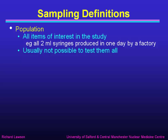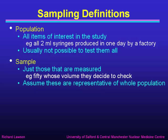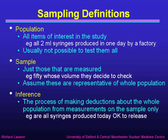Starting with some definitions. The population means all items of interest in the study. For example, if we're interested in a factory that makes 2ml syringes, then all the syringes produced in one day in that factory might be the population. But it's not possible to test all of them, so we usually talk about a sample — just those that are going to be measured. We might take 50 syringes to check the volume. We have to assume those are representative of the whole population. Inference means making deductions about the whole population from measurements on the sample only — for example, are all the syringes produced today OK to release? We can't test them all, so we test a sample and make inferences.